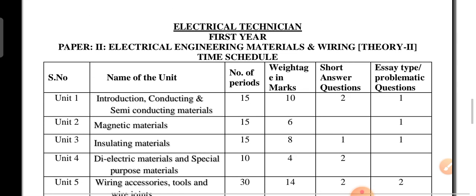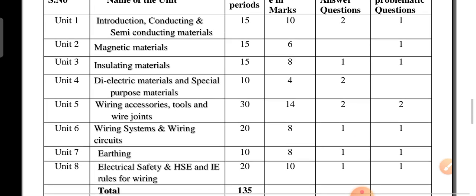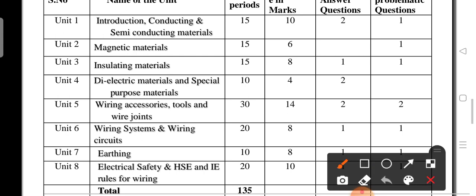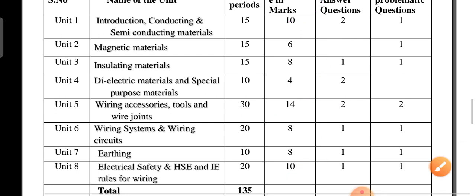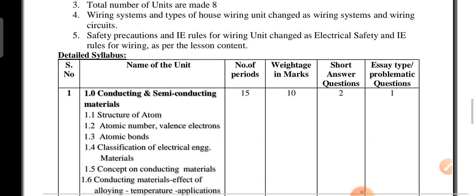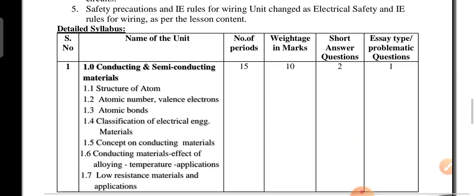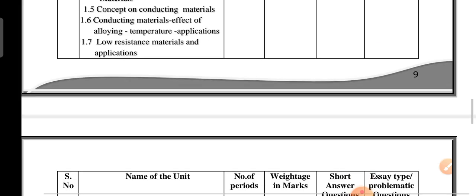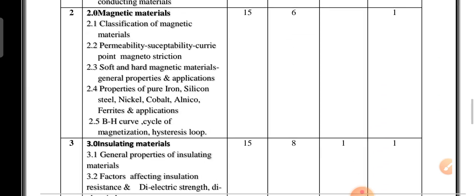For Paper 2, Electrical Engineering and Materials Welding, there are a total of 8 units. The blueprint shows 10 marks weightage for Unit 1, 14 marks weightage for Unit 5, and 10 marks for Unit 8. The first unit has a lot of important questions. You should go through the syllabus and identify which topics in Unit 1, Unit 4, Unit 5, and Unit 8 are most important.